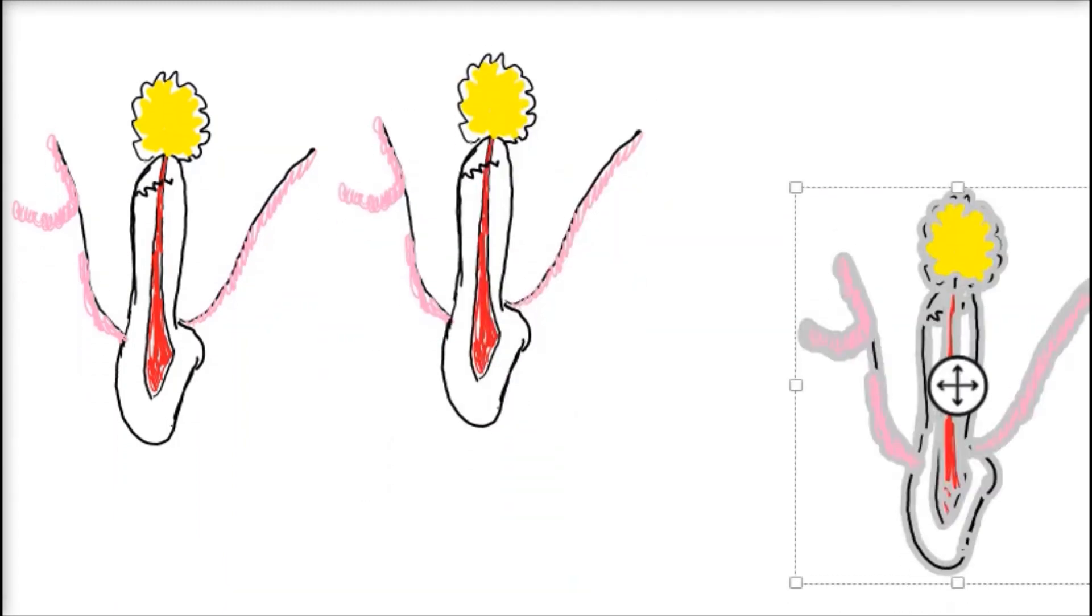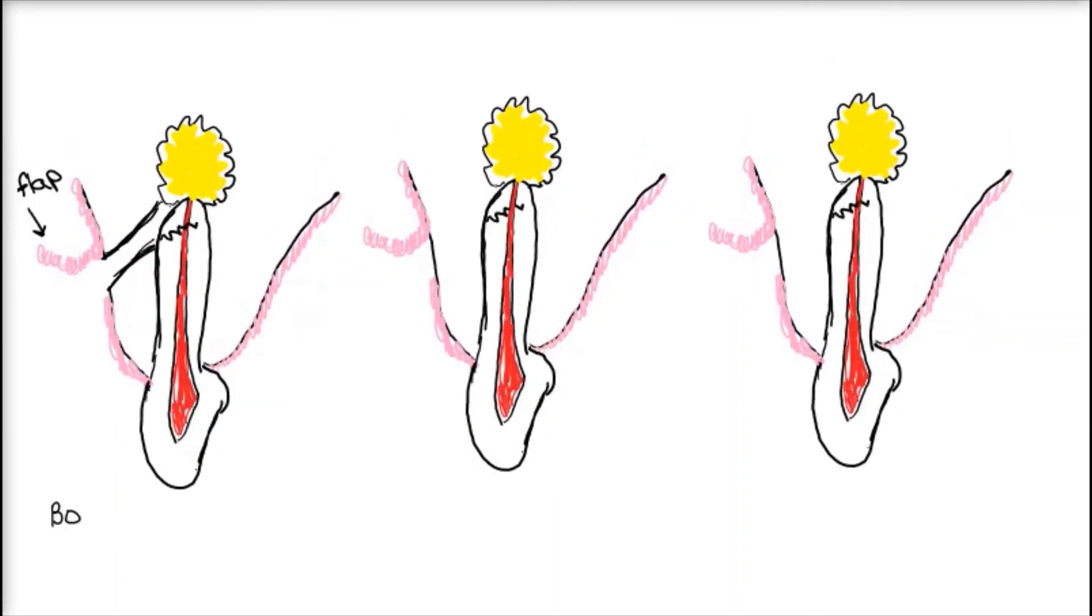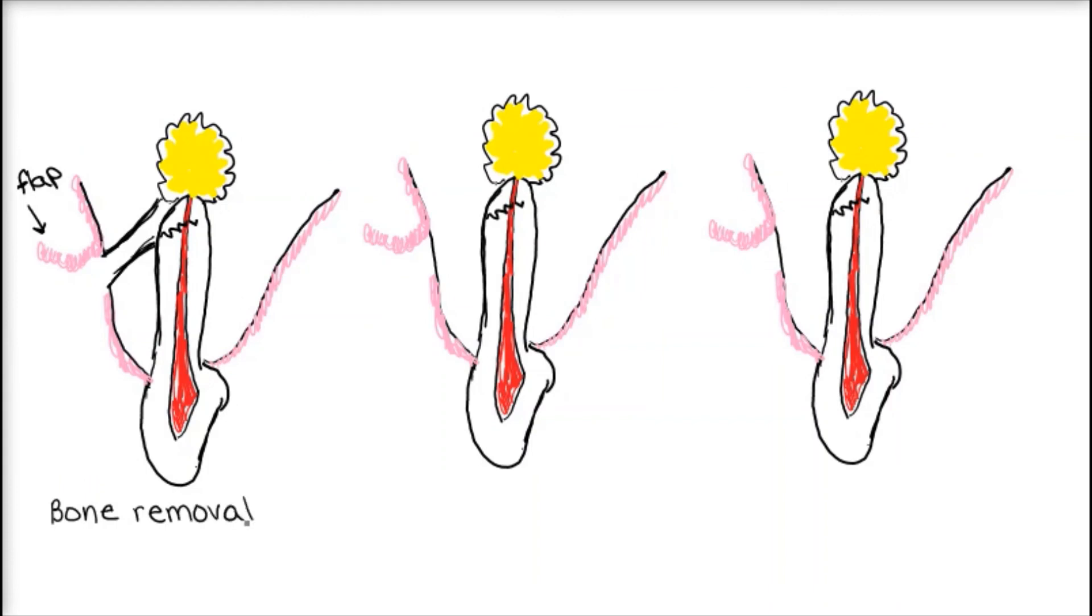The first thing I will show is that the mucoperiosteal flap is raised. This is so that we can have direct view and access to the bone so that it can be removed to access the area in question. With this view, bone is removed for access and visualization. Then apical root and surrounding tissues are targeted and removed.